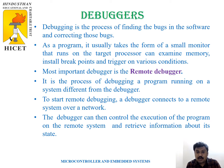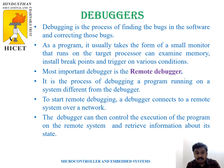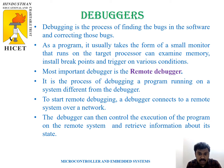Debugging is the process of finding bugs in the software and correcting those bugs. As a program, it usually takes the form of a small monitor that runs on the target processor that can examine memory, install breakpoints, and trigger on various conditions. This debugger has a capability known as remote debugging. Remote debugging is a program that runs on a system that is different from the debugger. To start remote debugging, you connect the debugger to a remote system over the network.